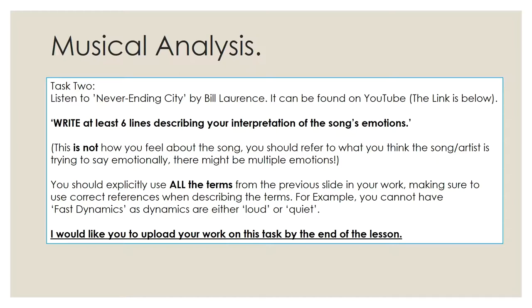Make sure you're using these terms correctly in describing the song — don't just say 'it has fast dynamics' or something made up, because dynamics is to do with volume, so you only have loud or quiet; you can't have fast. Take your time with that one. I want at least six lines — you could do a whole page if you wish, I'm very happy for you to do that — but at least six lines of really good writing describing the song using the terms we've just looked at.